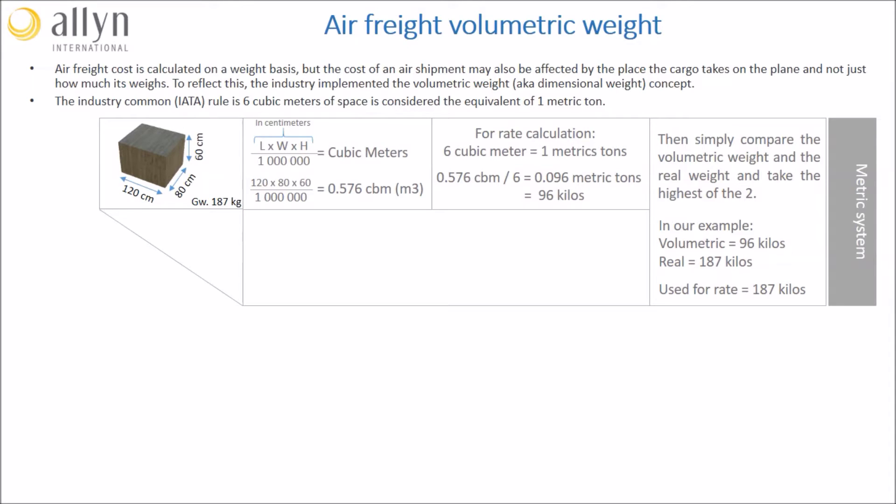Now that you are familiar with the concept, we would like to show you a shorter and faster methodology. We once again multiply the length by the width and the height. At this time, we divide it by 6,000, and this will give us directly the volumetric weight in kilos. In our example, 120 times 80 times 60 divided by 6,000 gives, as predicted, 96 kilos of volumetric weight.